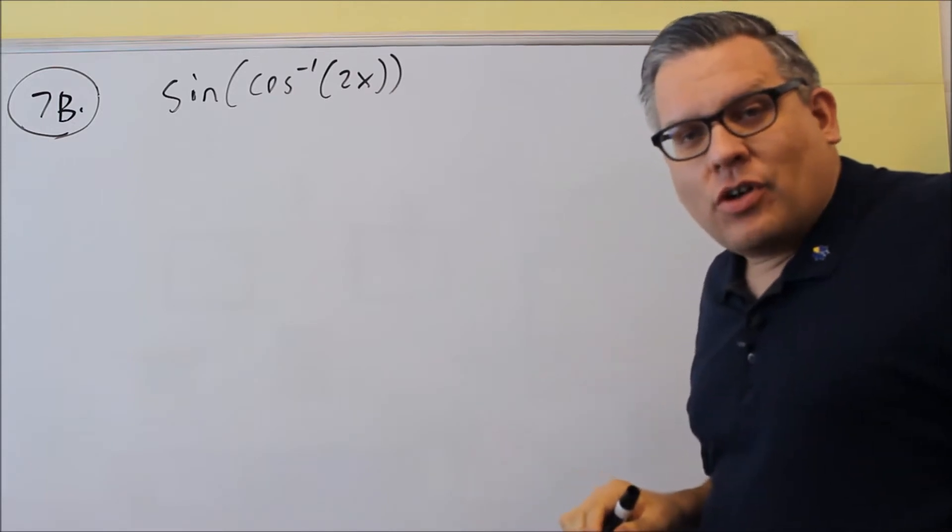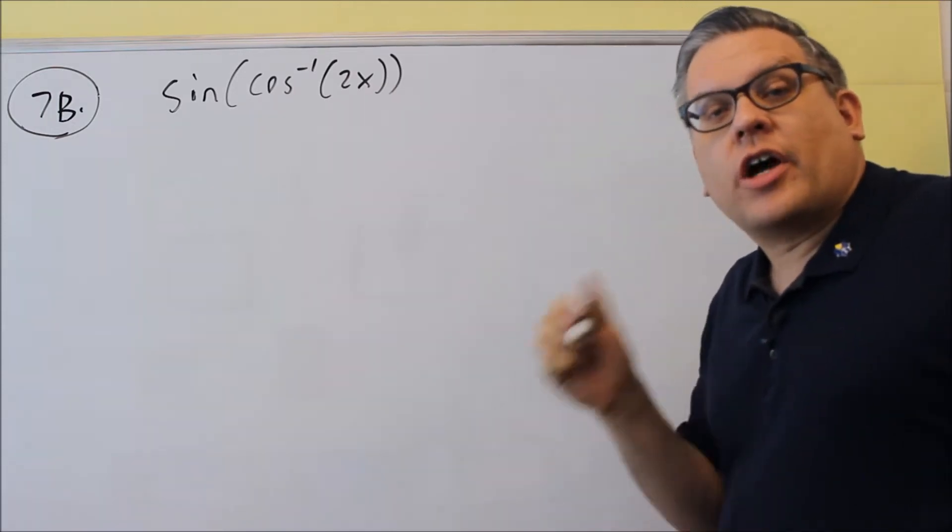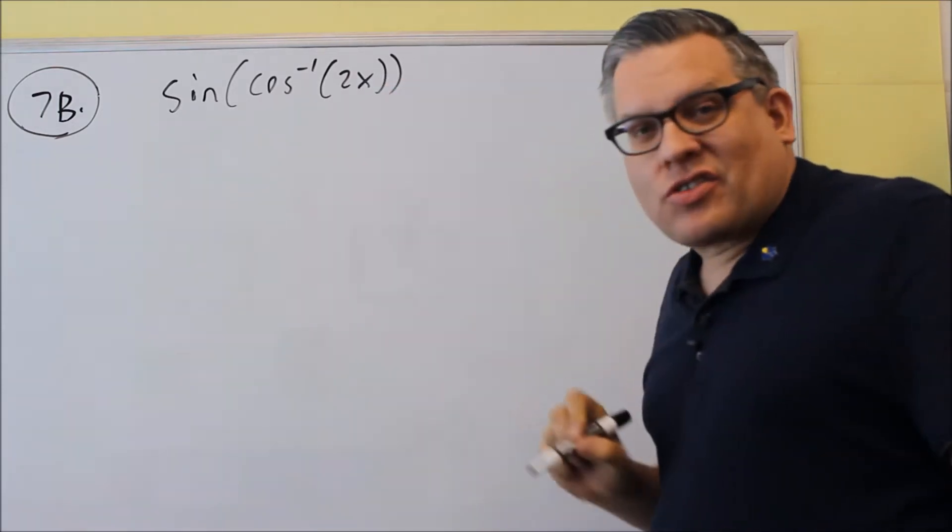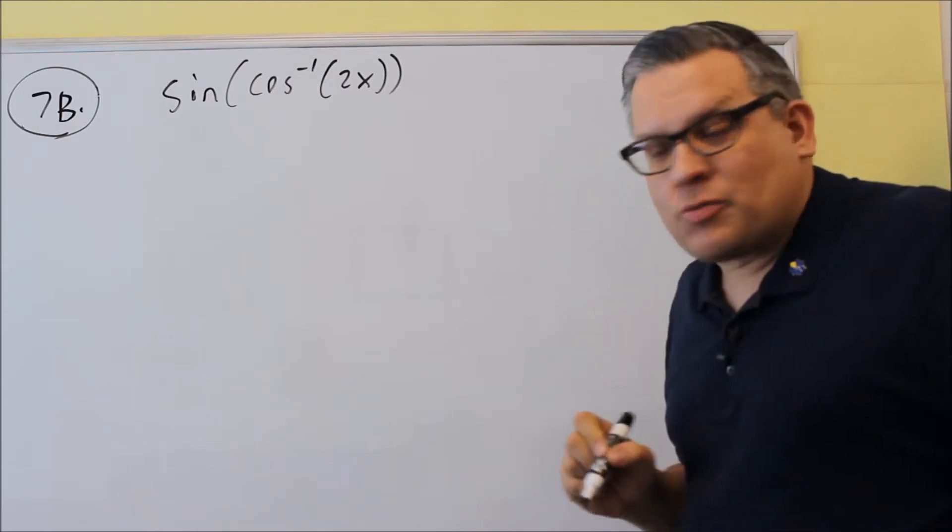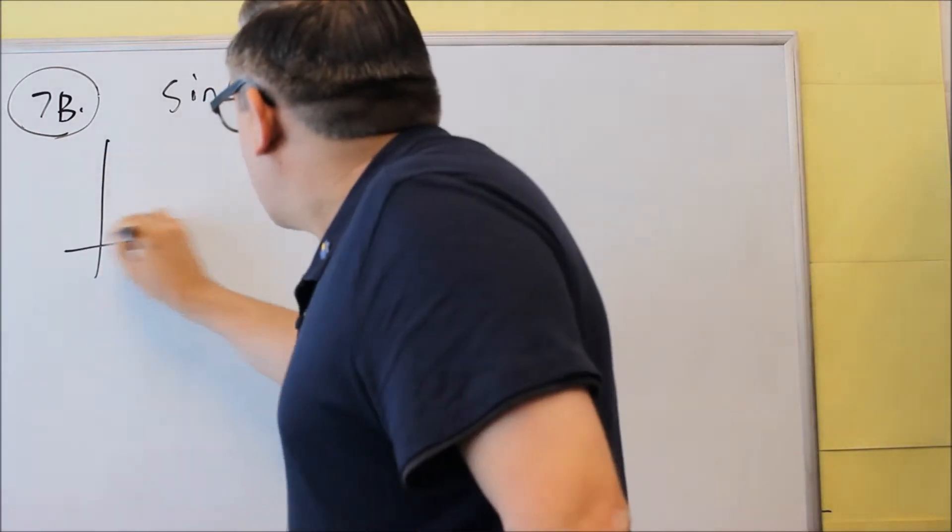So if x is positive, we need to first figure out which quadrant the triangle is going to be drawn in, but because x is positive, the only quadrant where everything is positive is going to be the first quadrant.